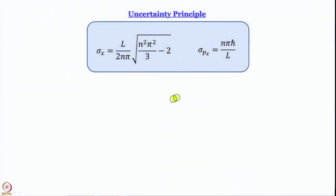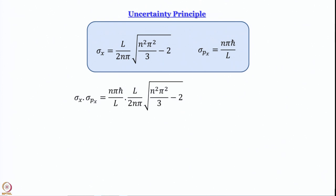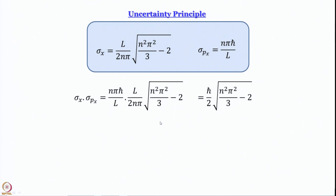σ_x is L/2 times √(n²π²/3 − 2) divided by nπ, and σ_p_x equals nπℏ/L. Multiplying them together: L and L cancel, nπ and nπ cancel, leaving ℏ/2 outside the square root sign, with n²π²/3 − 2 inside the square root.